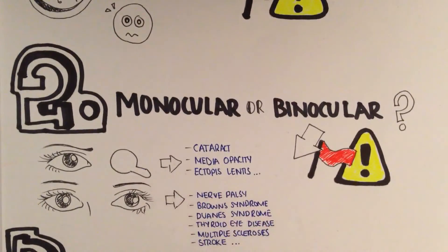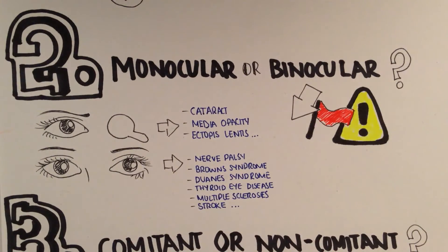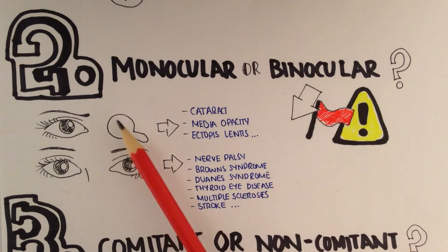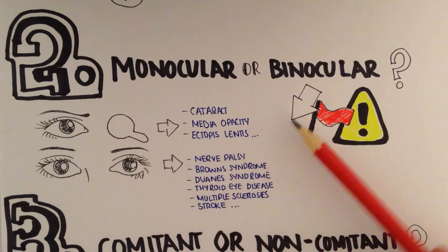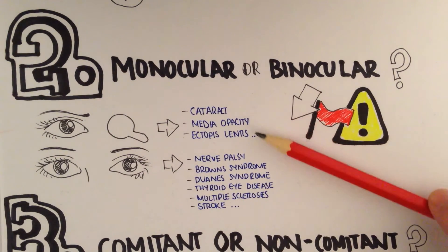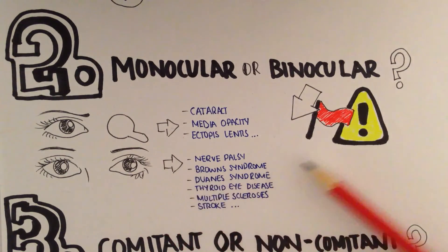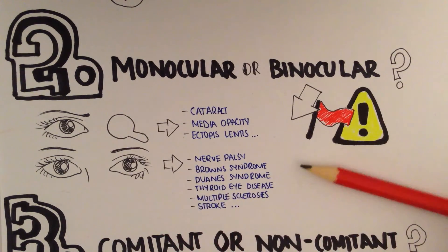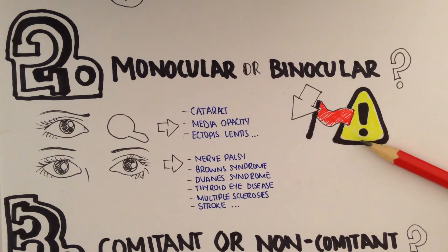The next question we need to be considering is this a monocular cause of diplopia or binocular diplopia? You simply get the patient to cover one eye and if they're still getting double vision then you know this is monocular diplopia, which can be caused by things such as cataract, media opacity, or even a dislocated lens. Or is this a binocular cause of diplopia? This is a little bit more serious, so the binocular cause is our red flag and our warning sign.